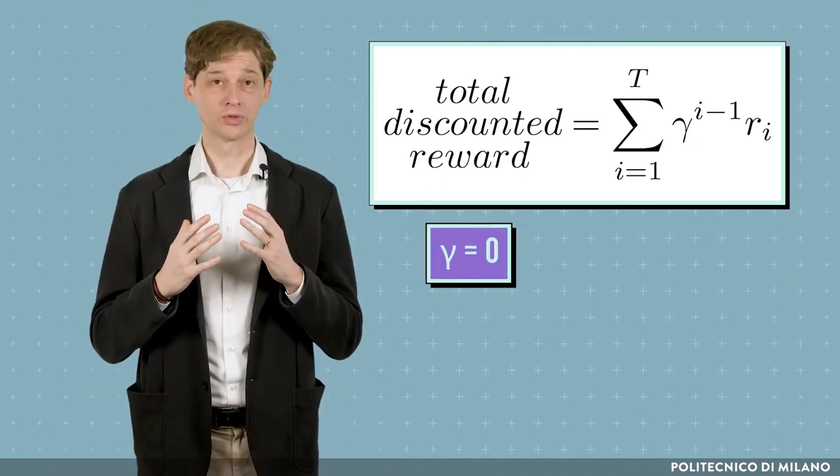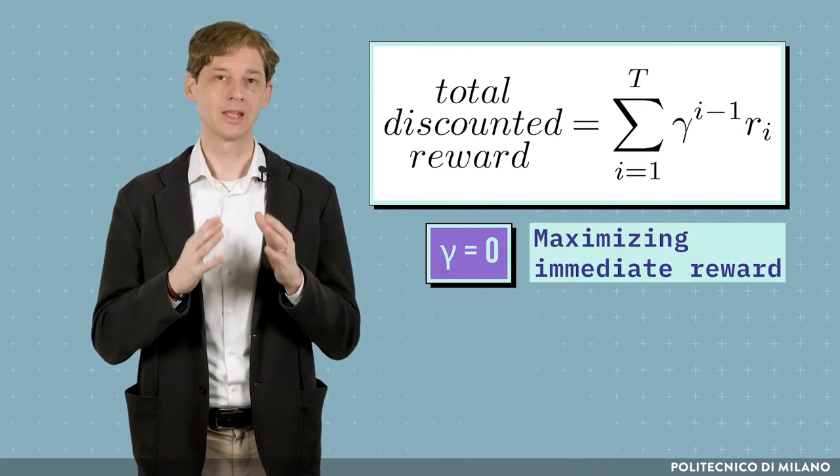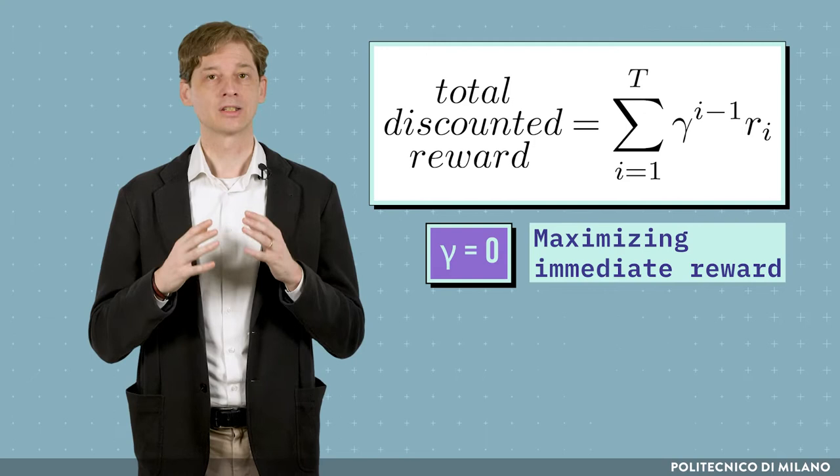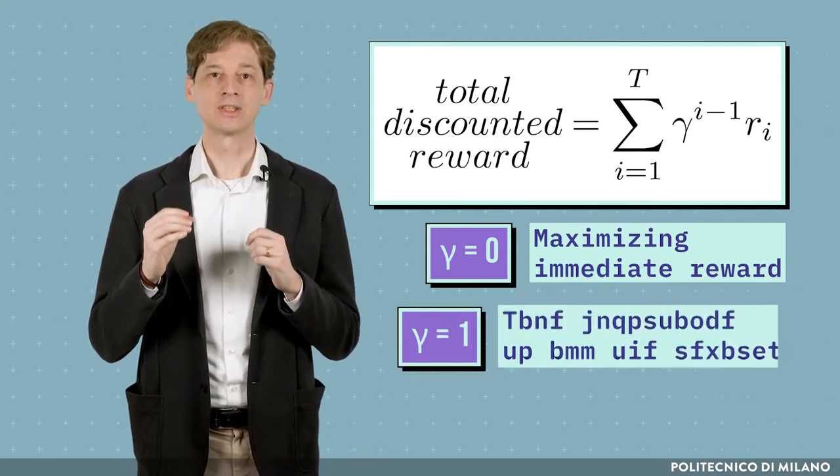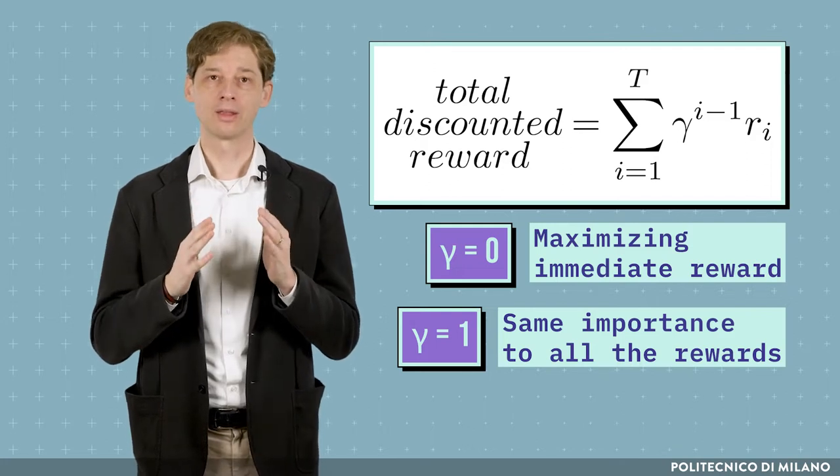If the discount factor is equal to 0, it means that the agent is only interested in maximizing the immediate reward. While a discount factor equal to 1 means that the agent gives the same importance to all the rewards, independently of when they will be collected.